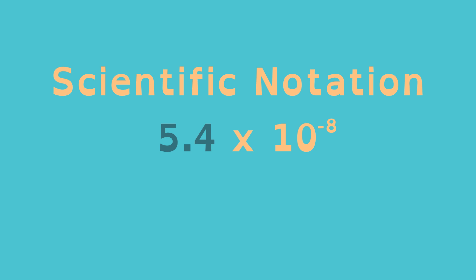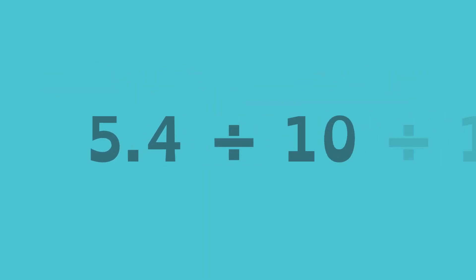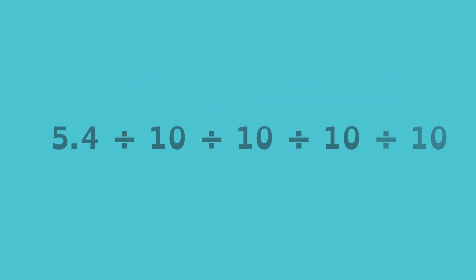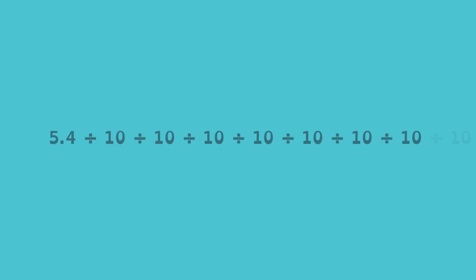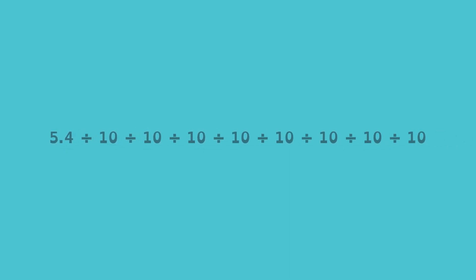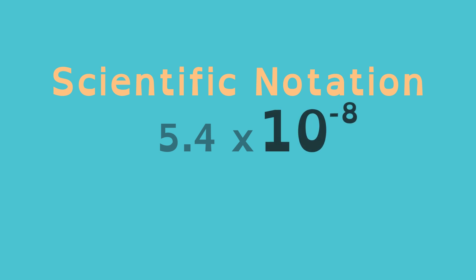This is the same as saying 5 and 4 tenths, divided by 10 eight times. A more concise way to show you're dividing 5 and 4 tenths by 10 eight times is to say you're multiplying 5 and 4 tenths by 10 to the power of negative 8. That's using scientific notation.